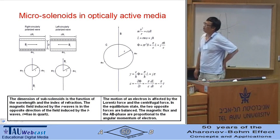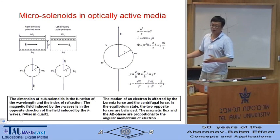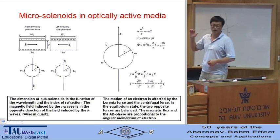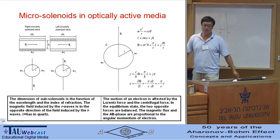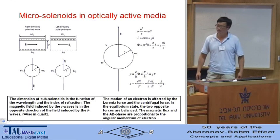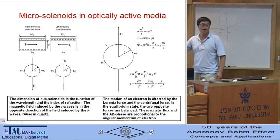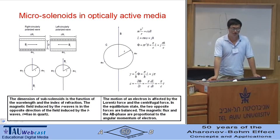The left-handed circularly polarized wave induces a magnetic field in the opposite direction of the left-handed circularly polarized back-propagating wave. So in this sense, we see that the optical activity is a Faraday effect.